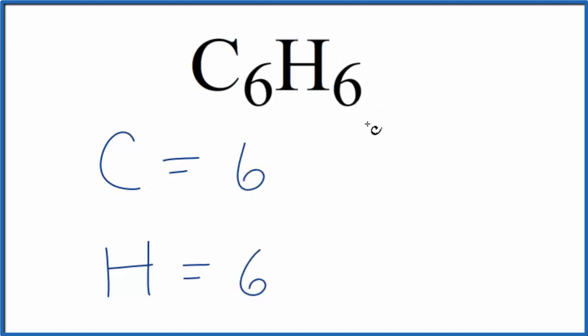Six hydrogen atoms. If you want to know the total number of atoms in benzene, it would be six plus six. We have twelve total atoms in C6H6.